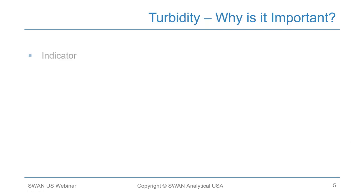Turbidity is an indicator of water quality and filtration effectiveness. Even ancient civilizations recognized its importance — they used basins to collect water, allowed sediment to settle, and poured off the clear water from the top. Turbidity is regulated by the EPA, which mandates that plants should be optimized to obtain turbidities less than 0.3 NTU in 95% of their samples and never greater than 1 NTU.